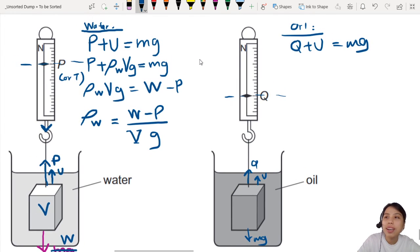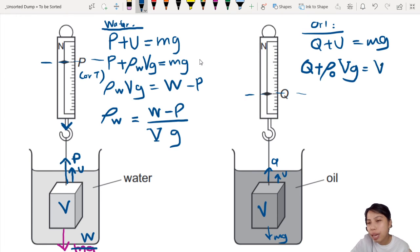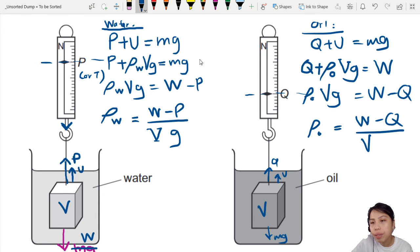Let's continue with the right side. We're going to do the same thing, same process. Sub in everything we know. Uptrust is due to density of the fluid, which is oil. ρ_O, volume V, gravitational constant g. And mg is just W. Now we do the same thing, we rearrange. So ρ_O Vg equals to W minus Q. So ρ_O equals to W minus Q over Vg.